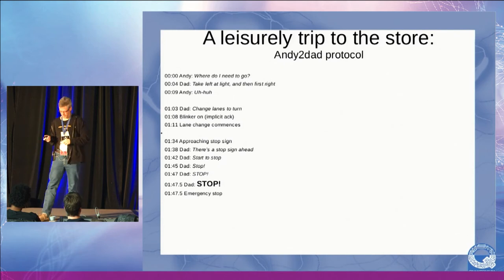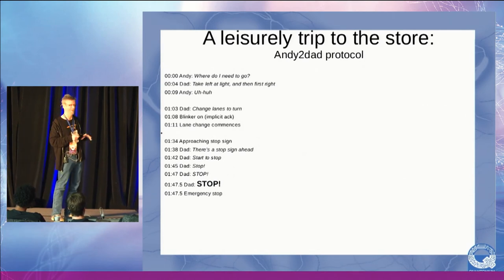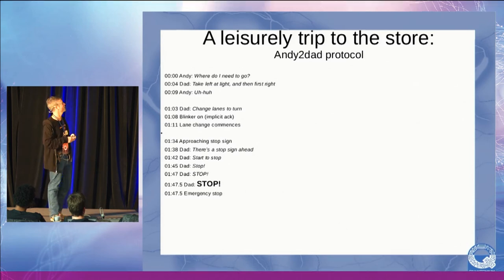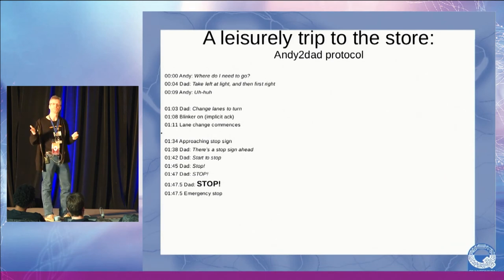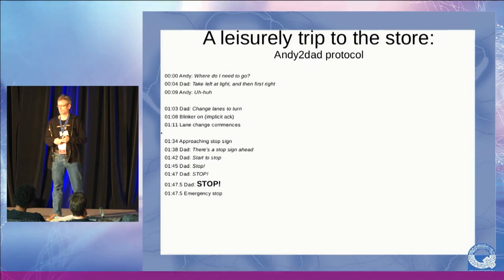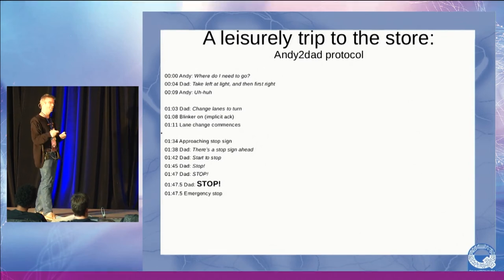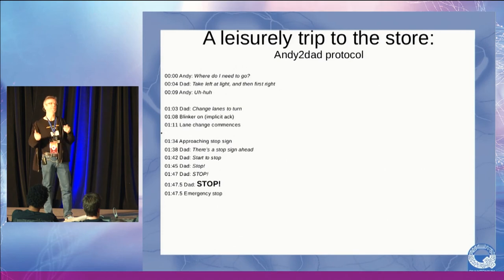Here's a script close to reality from driving with my son Andy. We're going to drive to the store — he has his learner's permit. First he asks where to go; I say take a left and a right. Driving along, I say change lanes — he turns the blinker on, which I take as an implicit acknowledgement. Then a stop sign is coming up. I say start slowing down; no response. I say stop; no response. Stop — no response. Stop — and he stops. The protocol was: send the command, increase urgency over time, until we get acknowledgement — which was actually the action.